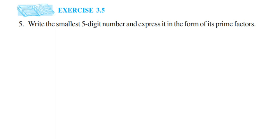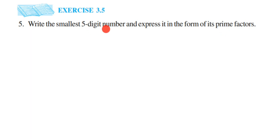Hey everyone, here's a question from exercise 3.5, fifth question. The chapter is 'Playing with Numbers' of classics. The question is: write the smallest five-digit number and express it in the form of its prime factors. So first we're going to find out what is the smallest five-digit number, and then we're going to express it in terms of prime factors.